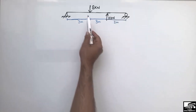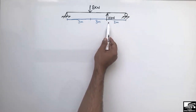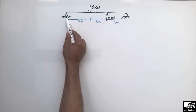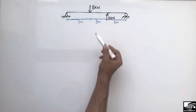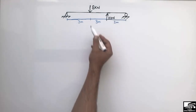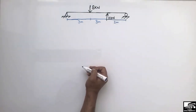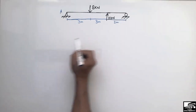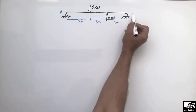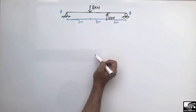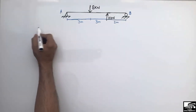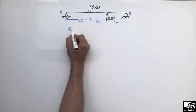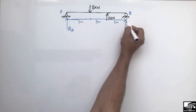There is no distributed load on this beam. With these two concentrated loads we have to find out the support reactions — how much reaction comes at these two supports — and then we can draw the shear force and bending moment diagrams. The first step is to find the support reactions. Let's consider support A as the hinge support and support B as the roller support. We assume these support reactions are acting upward, so they are RA and RB.